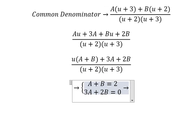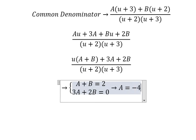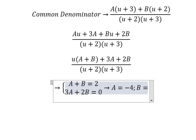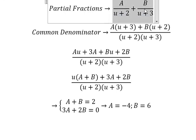So we got the solution of A and B. A equals to negative number 4. B equals to number 6. Now we go back to this one in here.